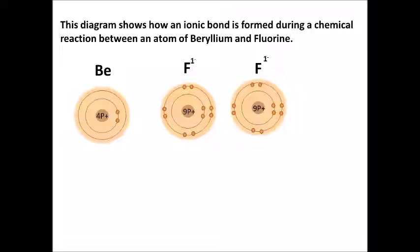That next electron goes over to another fluorine atom, and that fluorine atom will also then have a negative charge. Since our beryllium lost two valence electrons, it leaves only two negatively charged electrons and four positively charged protons in its nucleus, which means our beryllium atom now has a plus two charge.